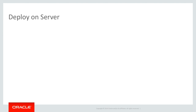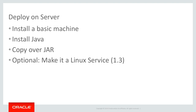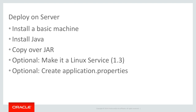What if you want to install the application on a server or on the Oracle Compute Cloud instead of the Oracle Application Container Cloud? You need to install a basic machine, install Java on that machine, and copy over the JAR file. You can also make it a Linux service. Since Spring Boot 1.3, it's actually possible to make a Spring Boot application a Linux service, and that's rather easy - all you need to do is create a link in the right directory and create some application properties to configure the application. So even if you don't use a PaaS cloud, it's still very easy to deploy the application.